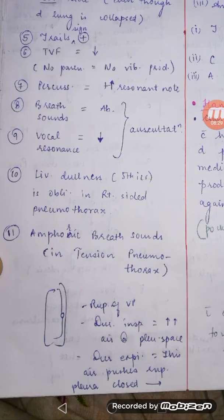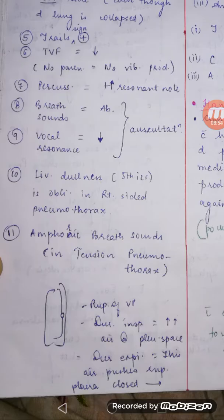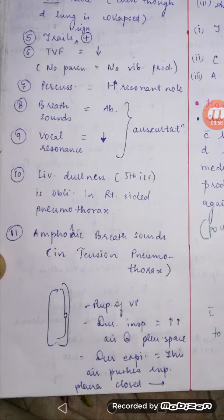Breath sounds are usually absent, but in tension pneumothorax you get abnormal breath sounds called amphoric breath sounds — a type of bronchial breath sound. Normally vesicular breath sounds are found all over the chest wall, and bronchial sounds are only over the trachea or large airways. In certain conditions like tension pneumothorax, bronchial breath sounds are heard in the lung parenchyma — these are the amphoric breath sounds.